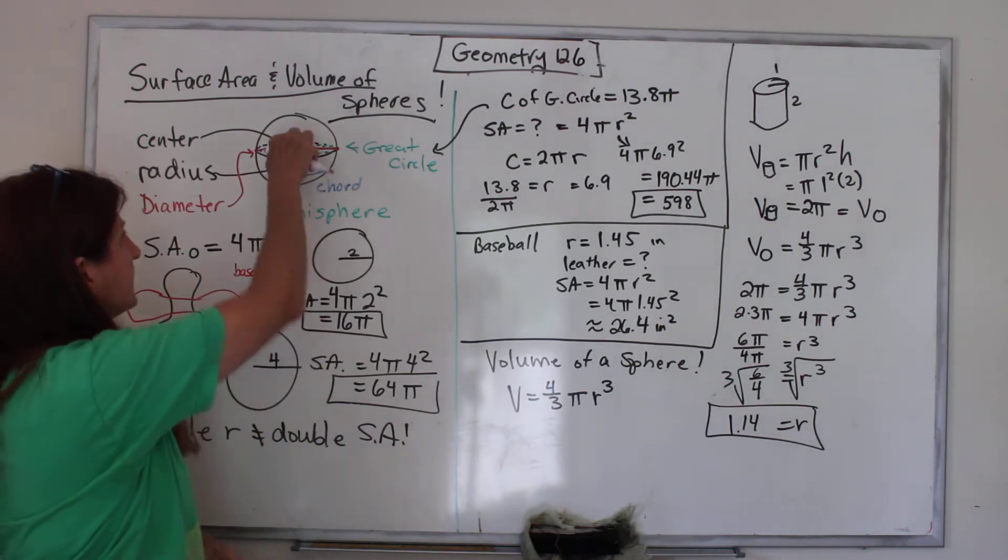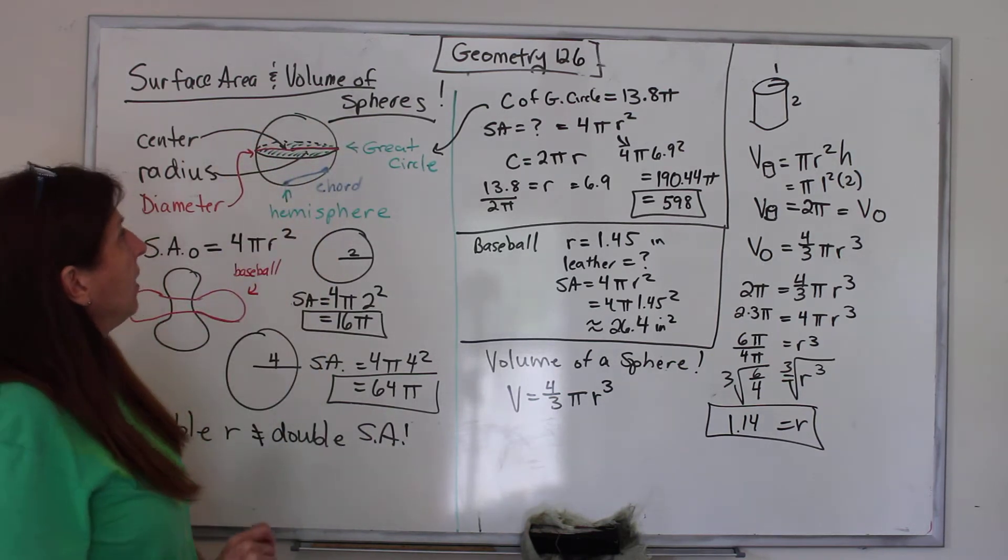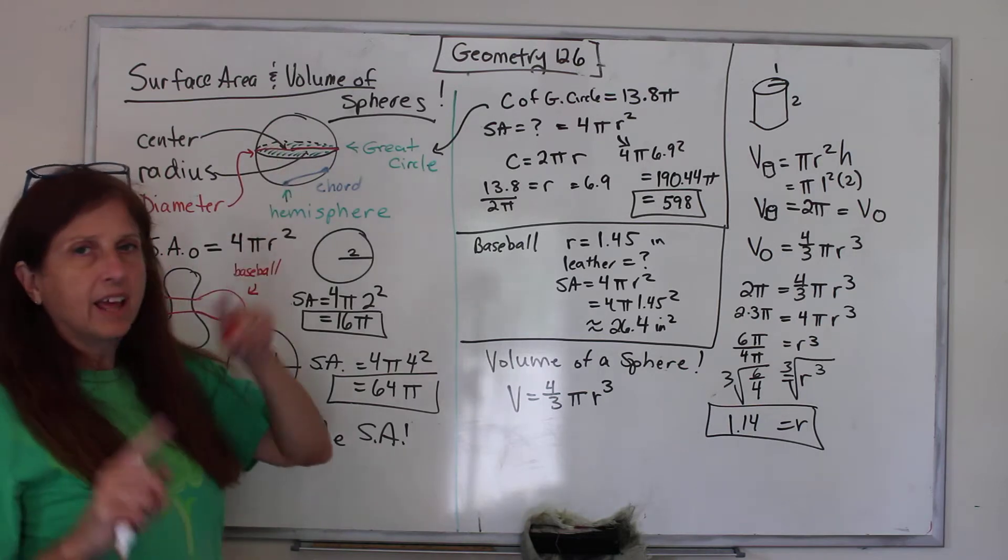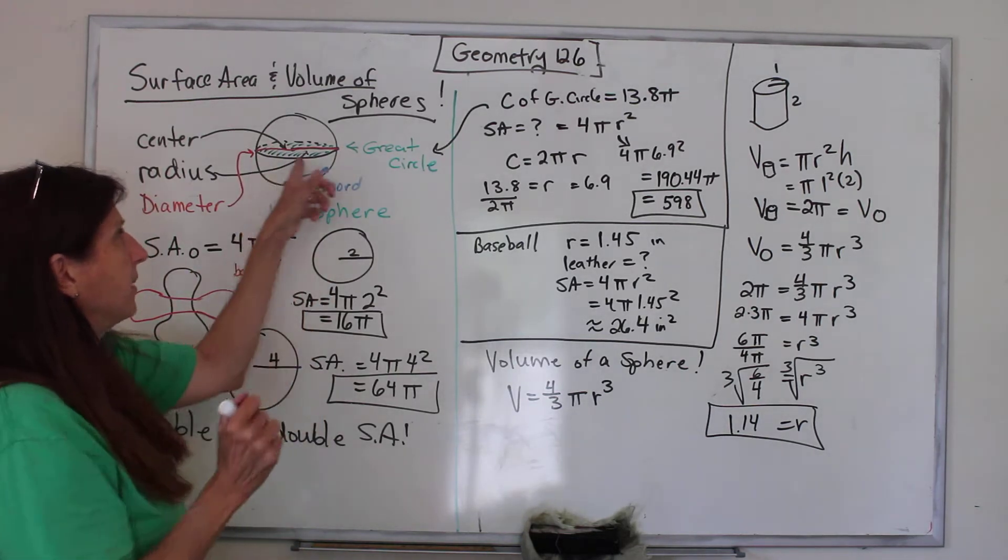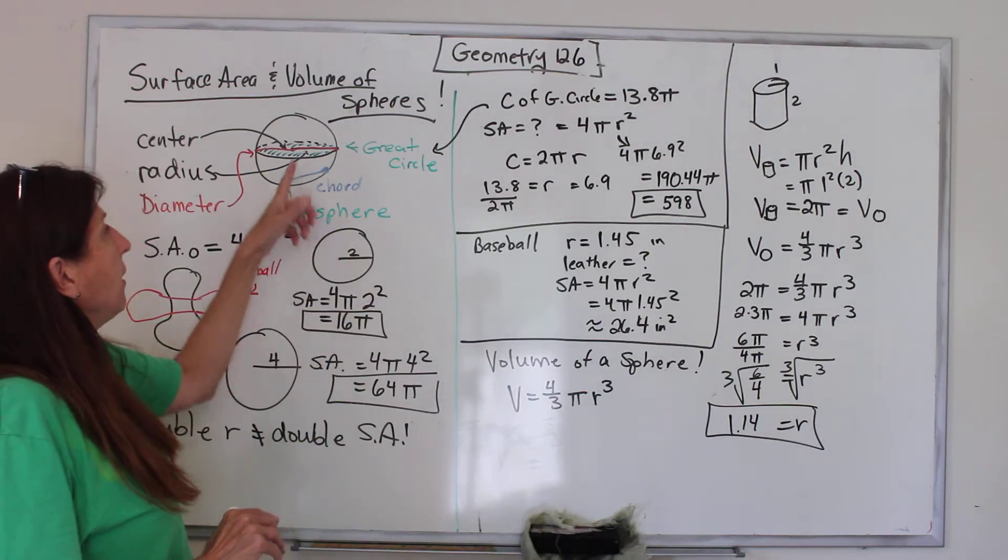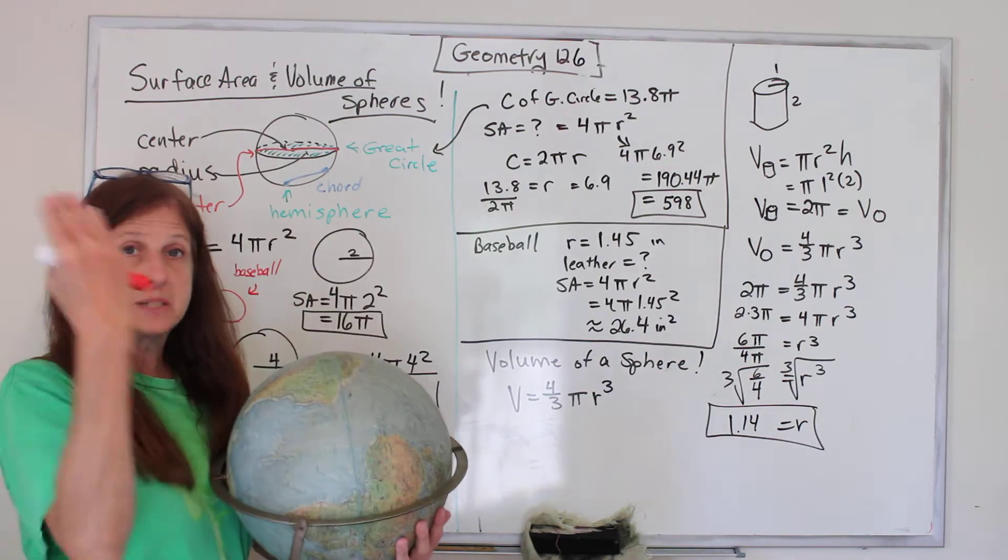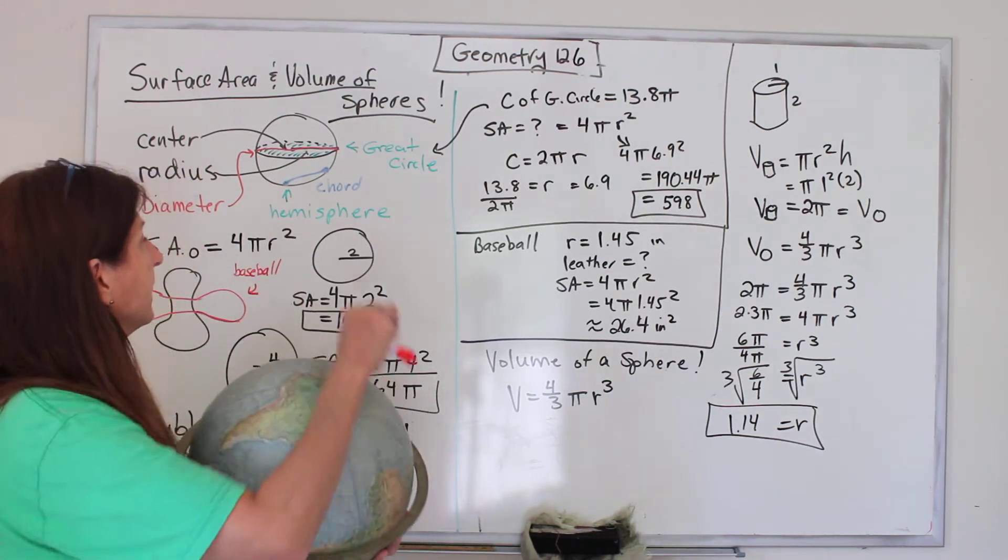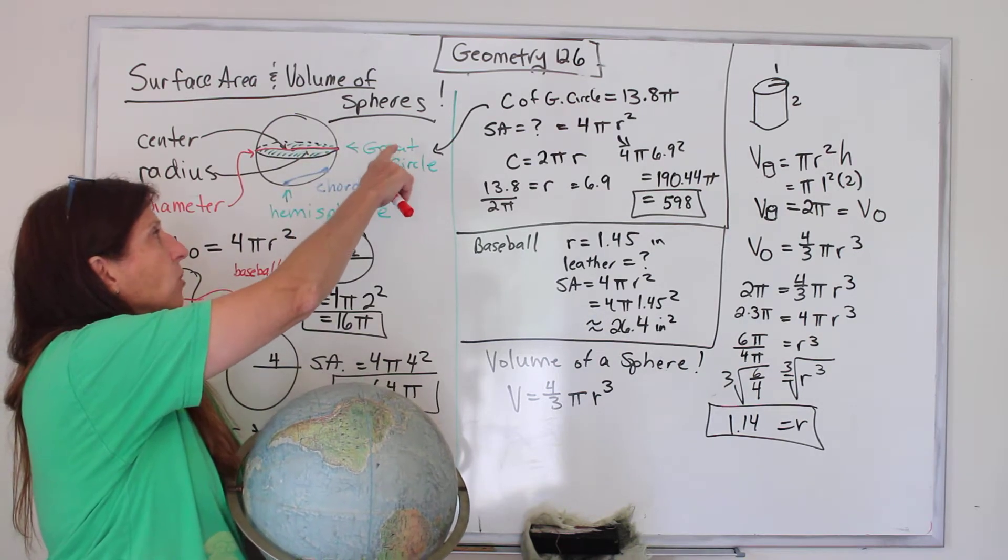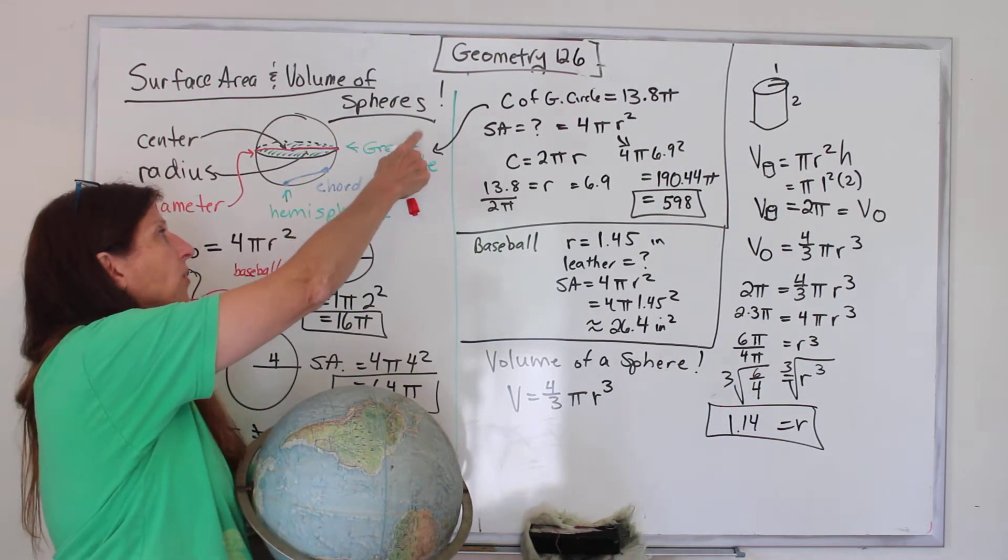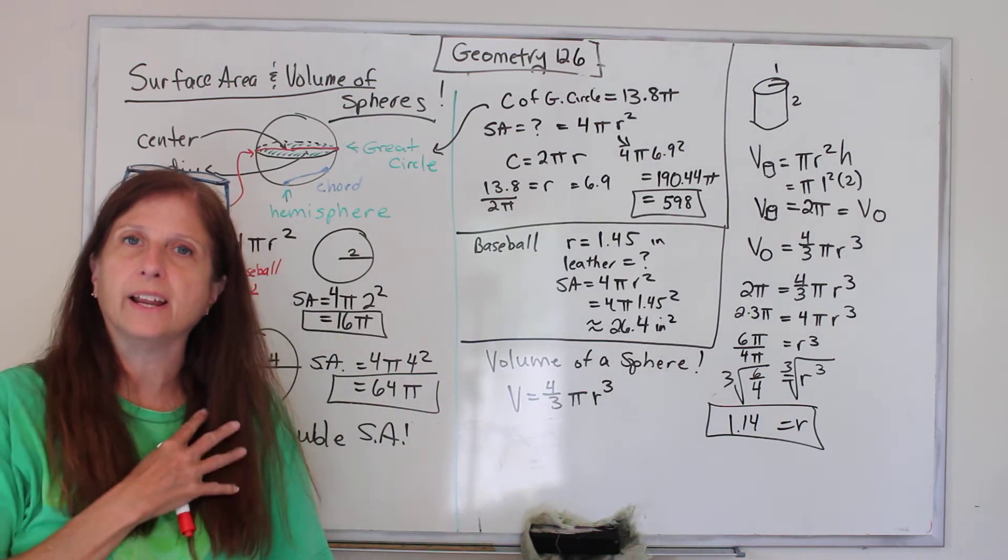If you draw a line all the way around where it is the very biggest, that's like the equator. If we did a cross-section of that, we would see the inside of the Earth. That cross-section of the very biggest place is called the Great Circle. That's very noble sounding, isn't it?